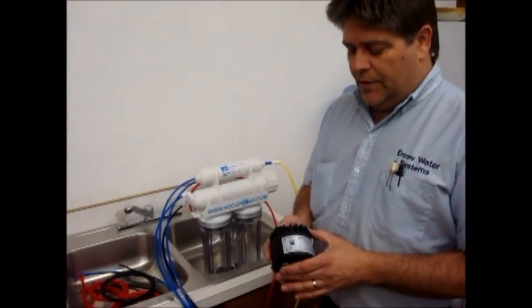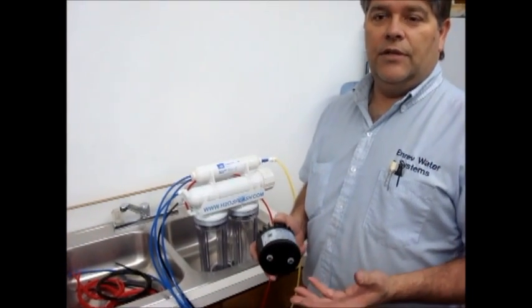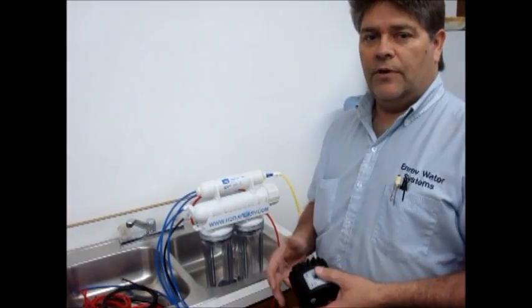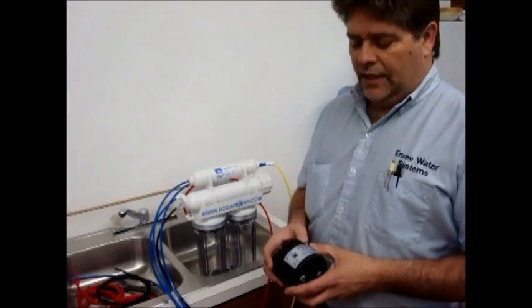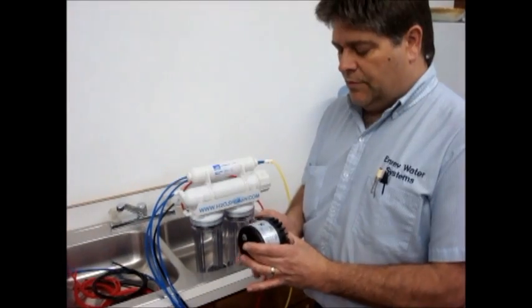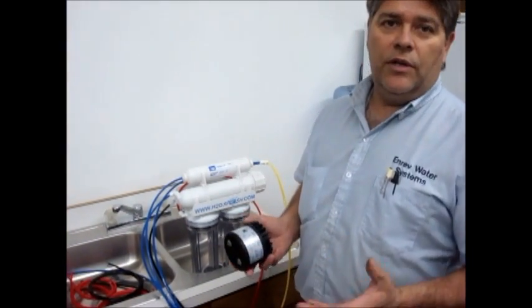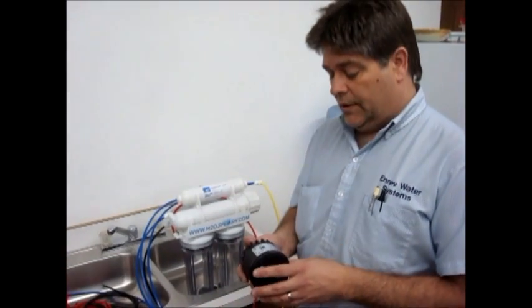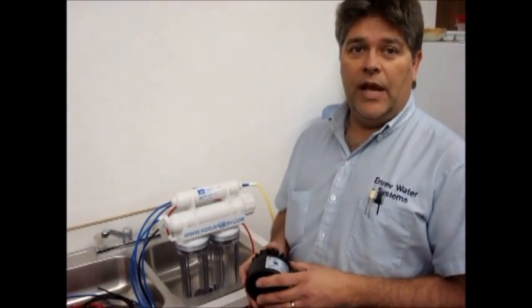The permeate pump is not electric. It doesn't use power except for the water pressure of the system or the incoming water pressure to make it work. What it will do basically is reduce wastewater by up to 80%.